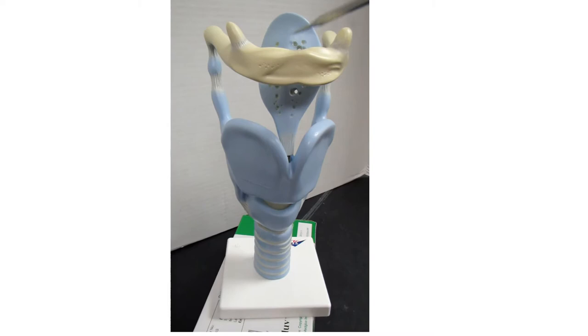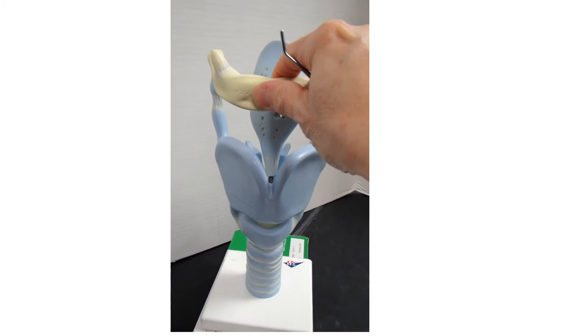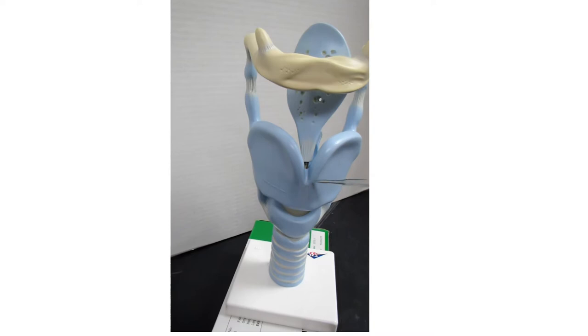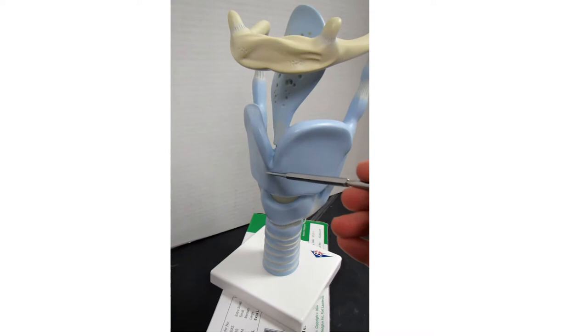We're currently looking at this model from its anterior position, so patient's left would be on this side, patient's right would be on this side, and we're approaching from the front. The structure right here is the laryngeal protuberance.